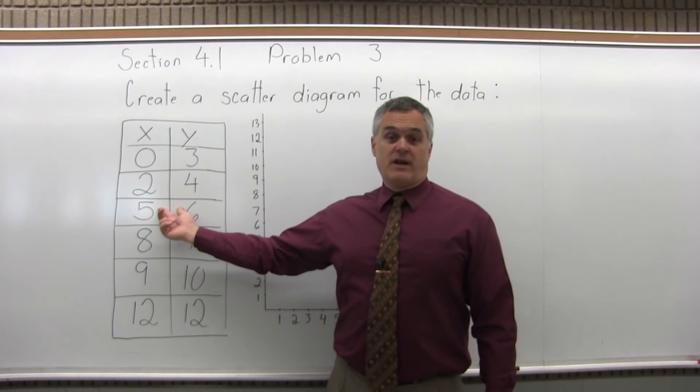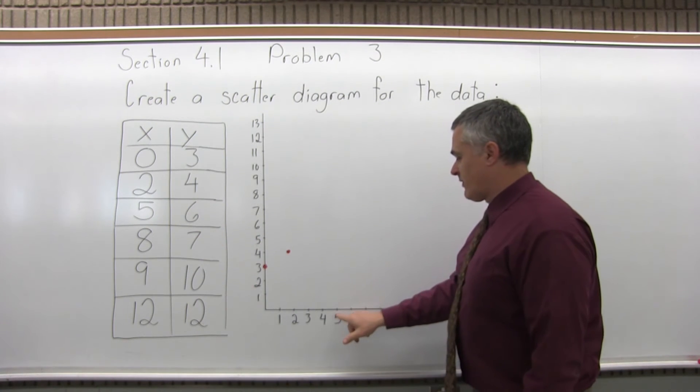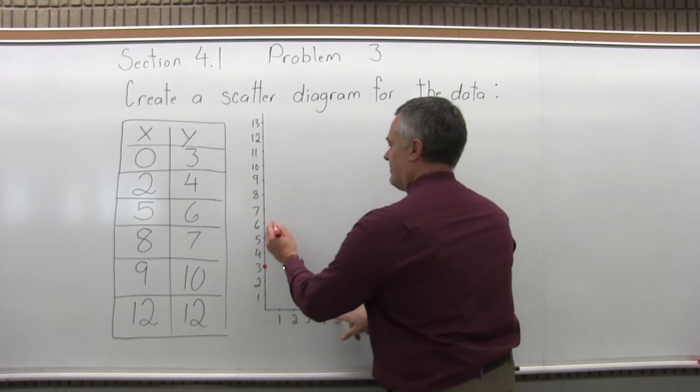The third point is 5, 6. 5 for x, 6 for y. So over 5, up 6.